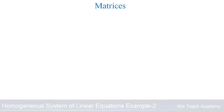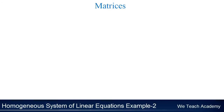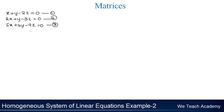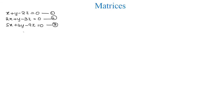Hello guys, in this video we are going to discuss an example relating to matrices. First let us consider a system of homogeneous linear equations. After naming these equations, in order to find their solutions we need to convert them into matrix form Ax is equal to 0. Now let us write the matrix E, whose elements are nothing but the coefficients of the variables.